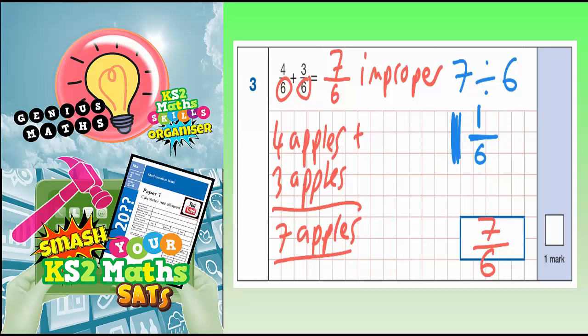So you could, if you really wanted to, put an answer of 1 and 1 sixth. But actually, you don't get any extra marks for that—you would still get the mark if you left it at 7 sixths.